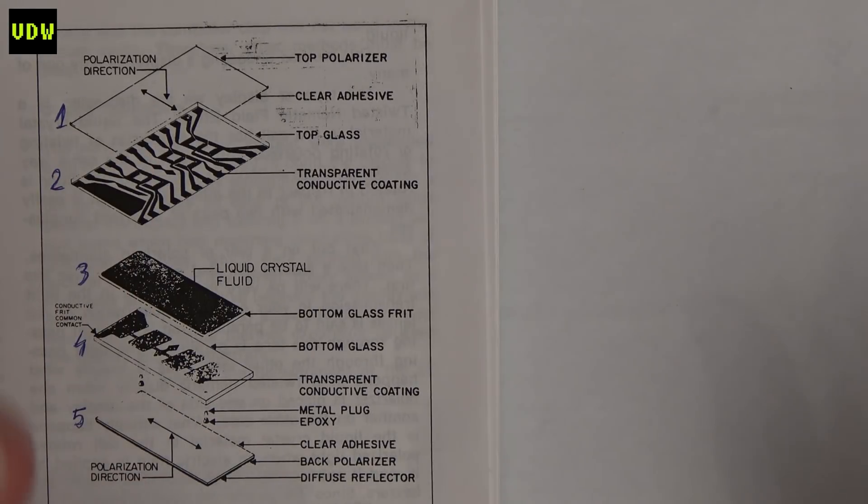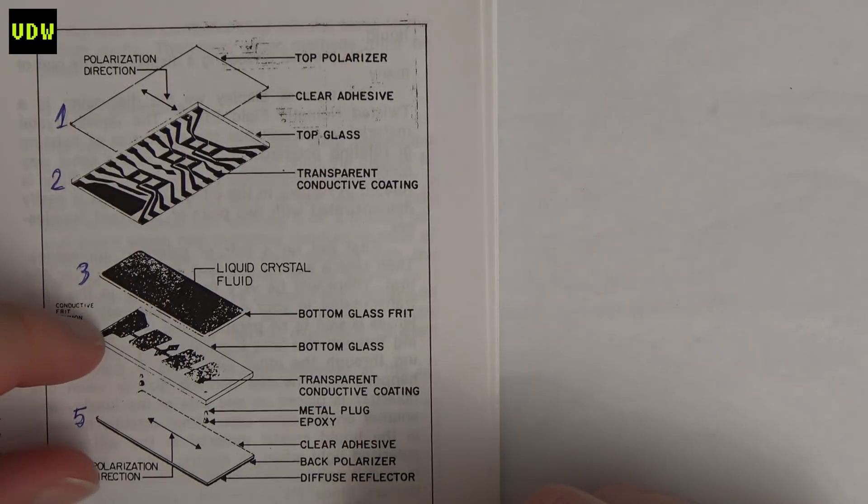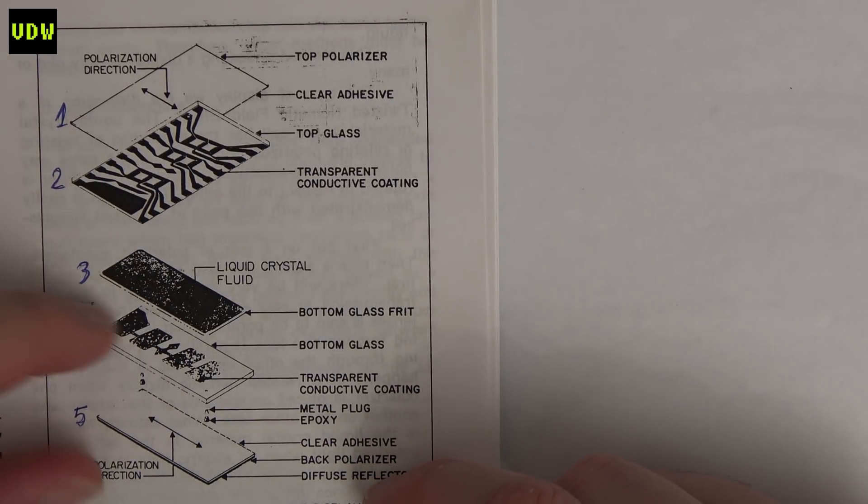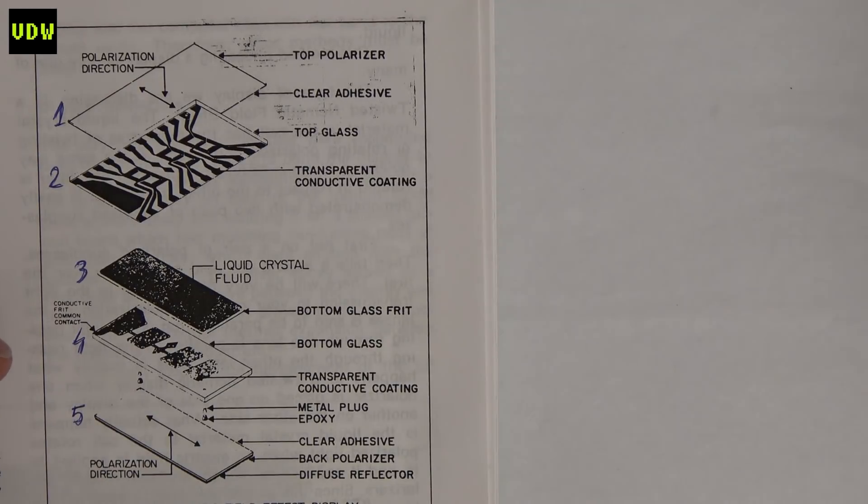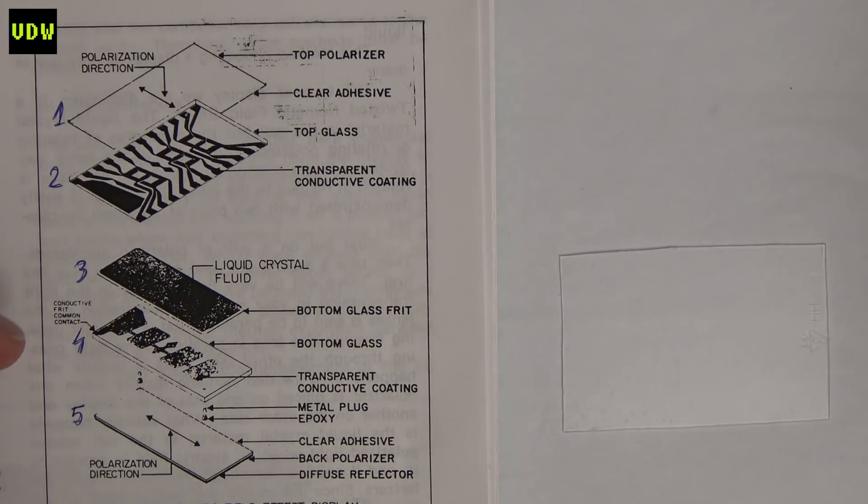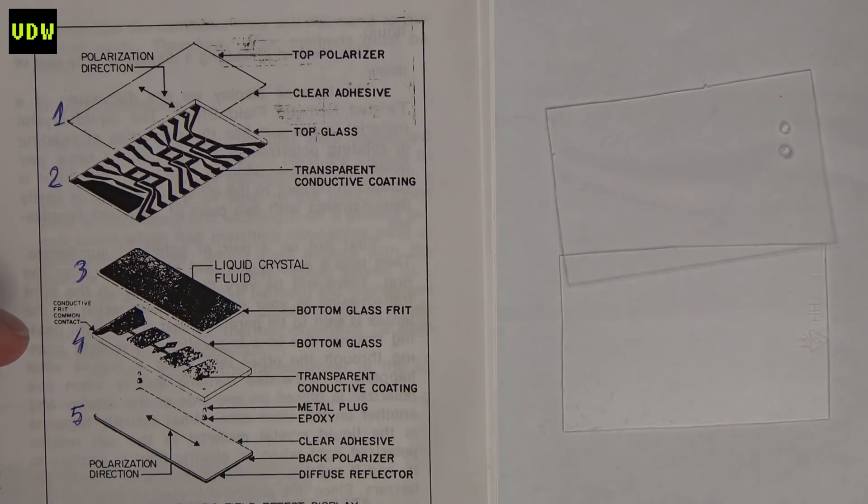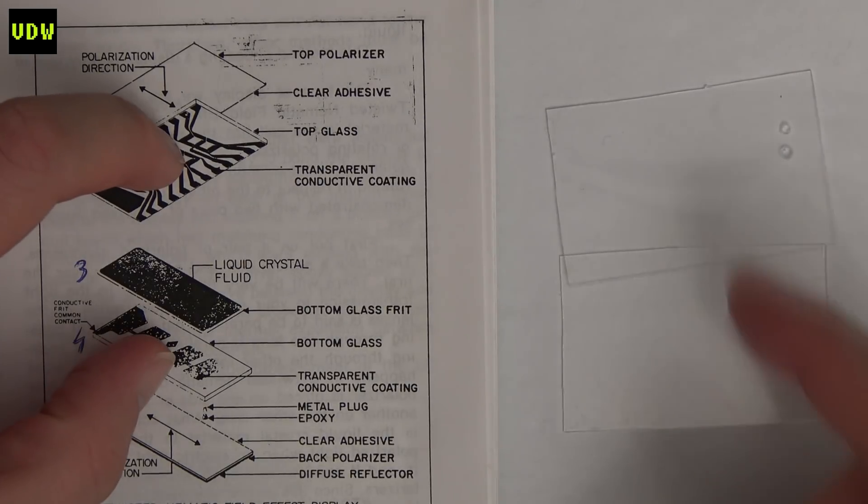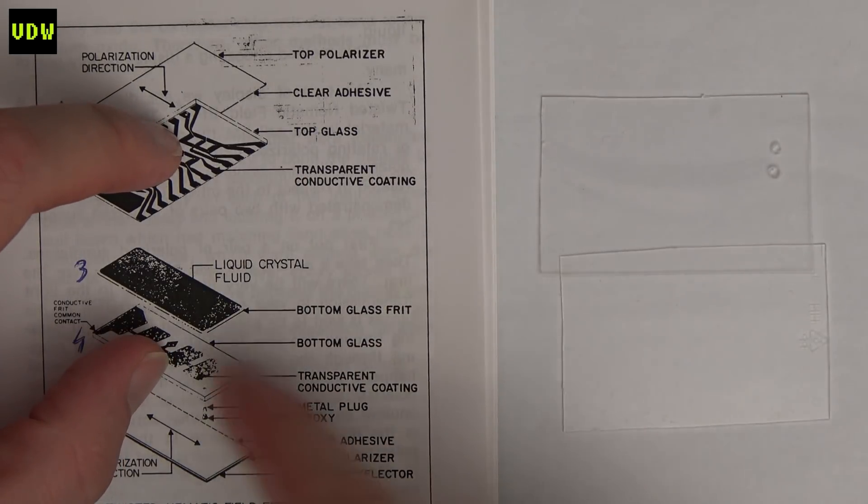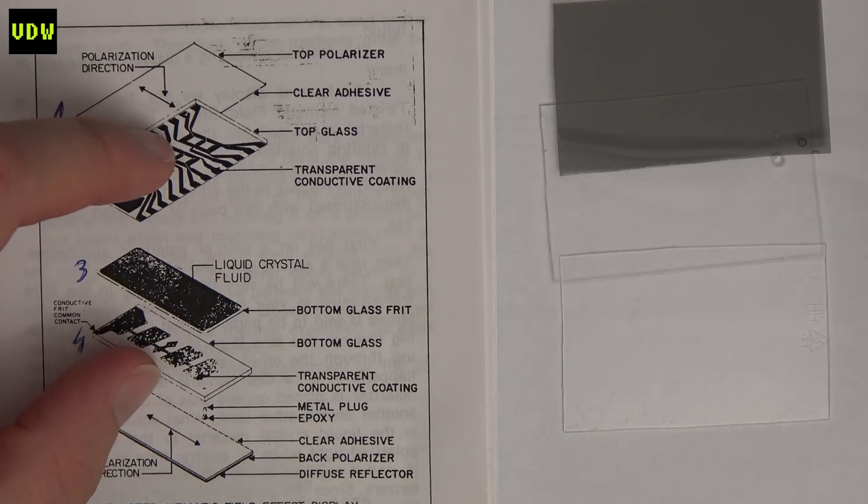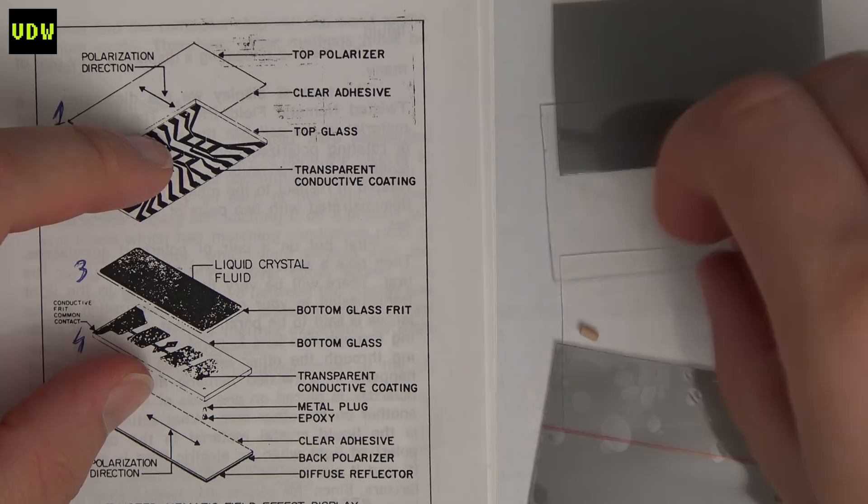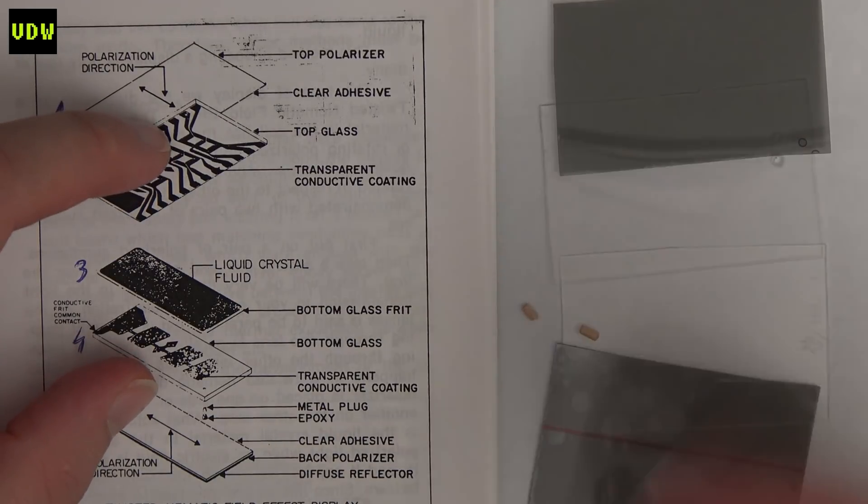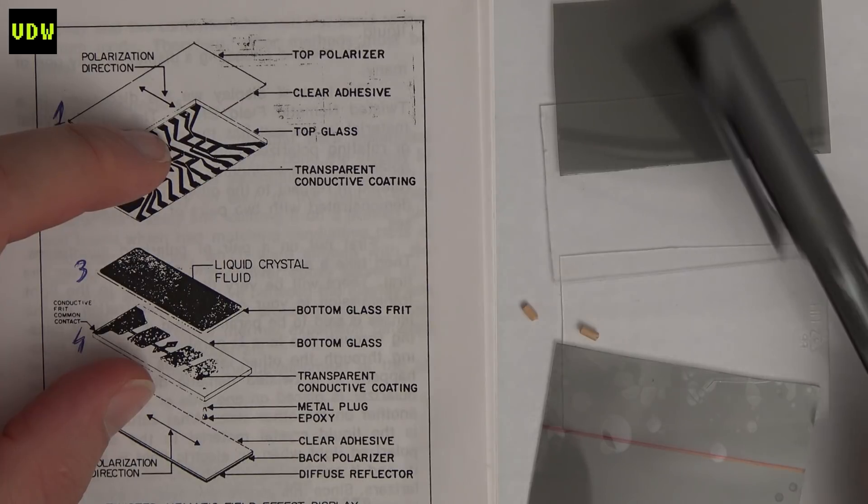Remember that we aren't building an actual LCD, we are just building a mock one for the sake of an easily comprehensible example. So we will need the two glass elements that are in the middle, we'll need a top polarizer, we'll need the bottom polarizer, we're also going to need a couple of corks, and we'll need something to etch the pattern on.